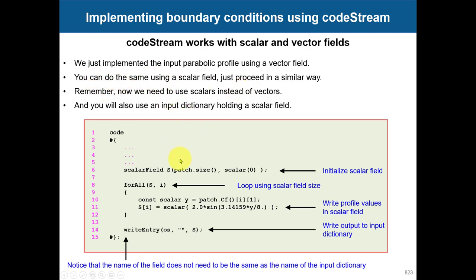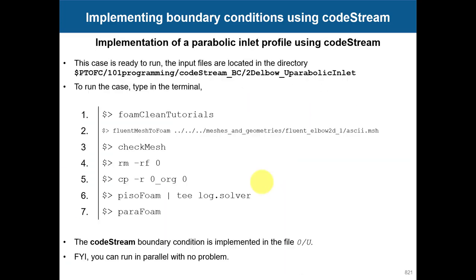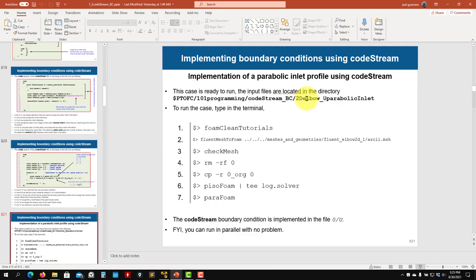For a scalar field, the approach is the same. You declare a scalar field, initialize the value for all faces using the forAll loop, access the face center coordinate with a const scalar, and then assign your value. The scalar implementation follows exactly the same pattern as the vector one.